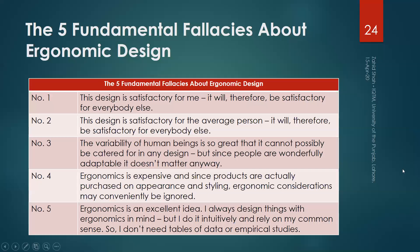The five fundamental fallacies about ergonomic design. The first one is that the design is satisfactory for me, it will therefore be satisfactory for everybody else. So the designer sets himself or herself as the standard, and whatever he or she thinks — based on some intuition and knowledge — if he feels the design is okay for him, it should be satisfactory for everybody else.